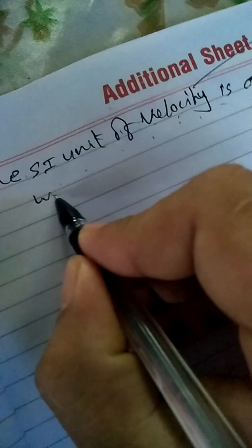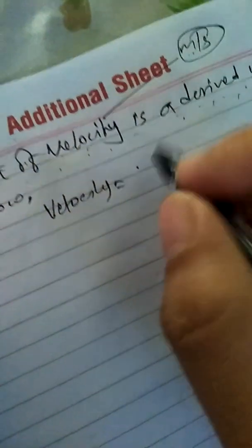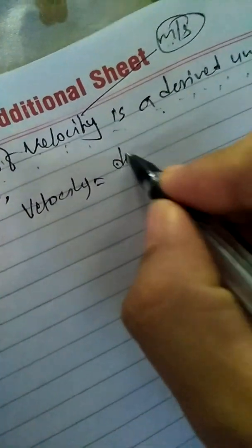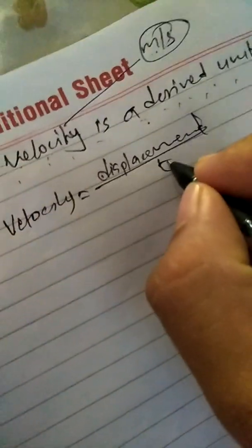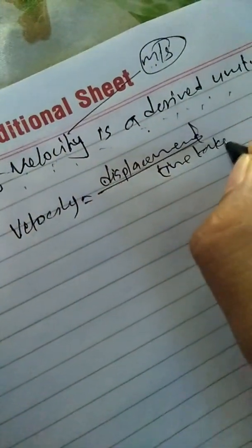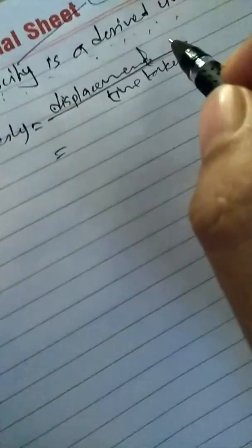Why is meter per second called the derived unit? To show this, we know that velocity — everyone is familiar — the formula for velocity is displacement upon time, or you can say distance divided by time taken.